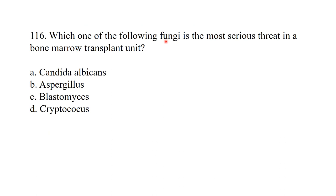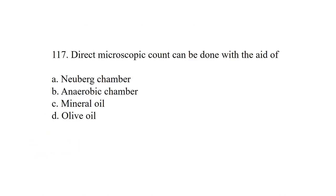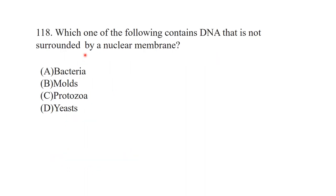Which one of the following fungi is the most serious threat in a bone marrow transplant unit? It is Aspergillus. Direct microscopic count can be done with the aid of a Neubauer chamber. Which one of the following contains DNA not surrounded by a nuclear membrane? That is bacteria — having no membrane-bound nucleus.